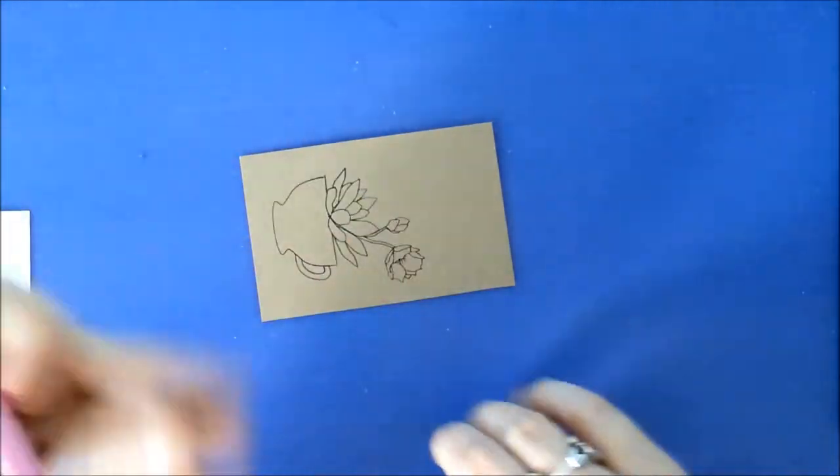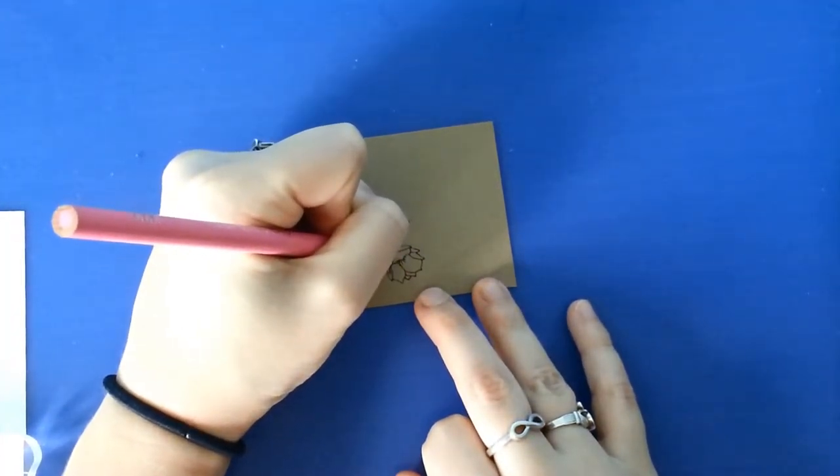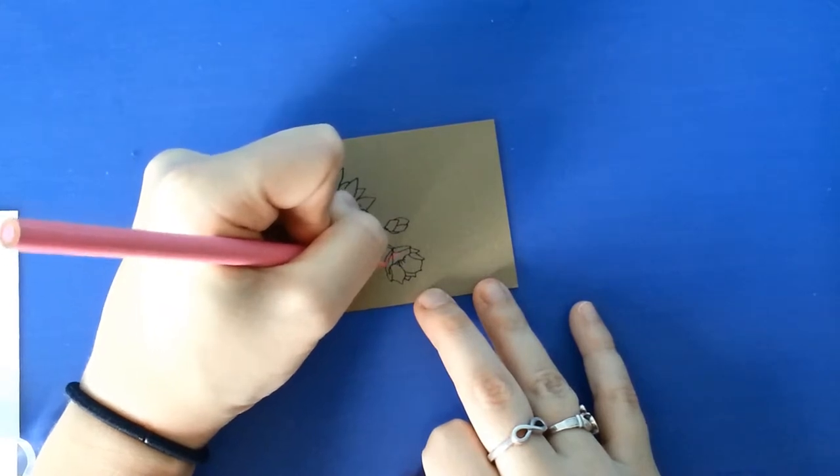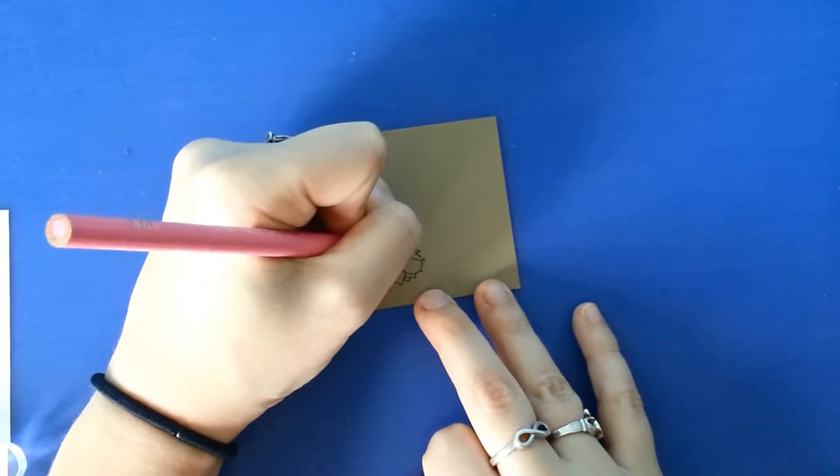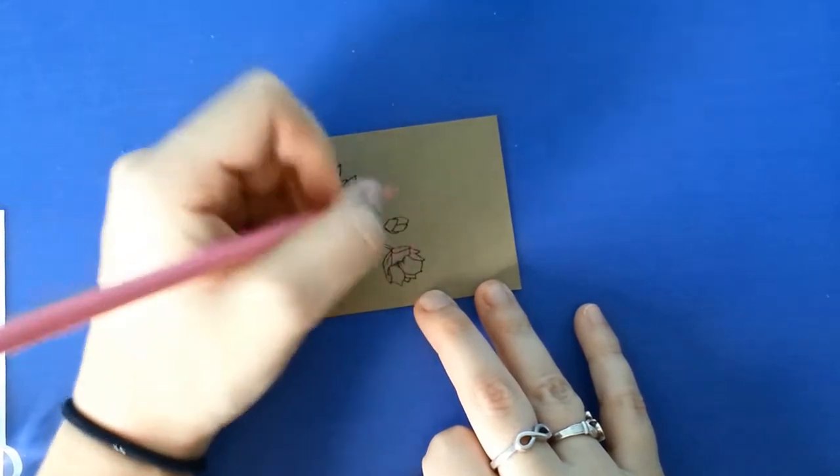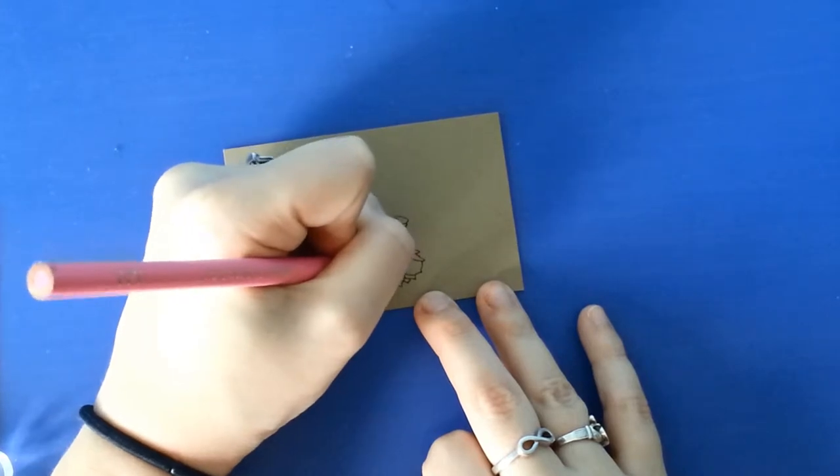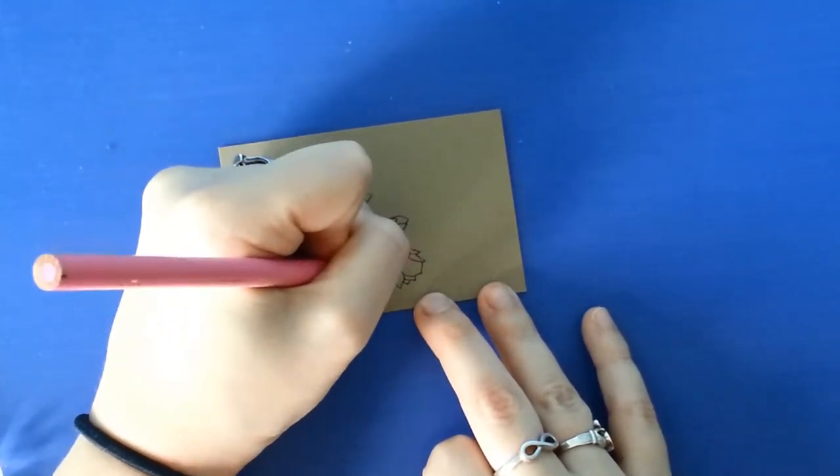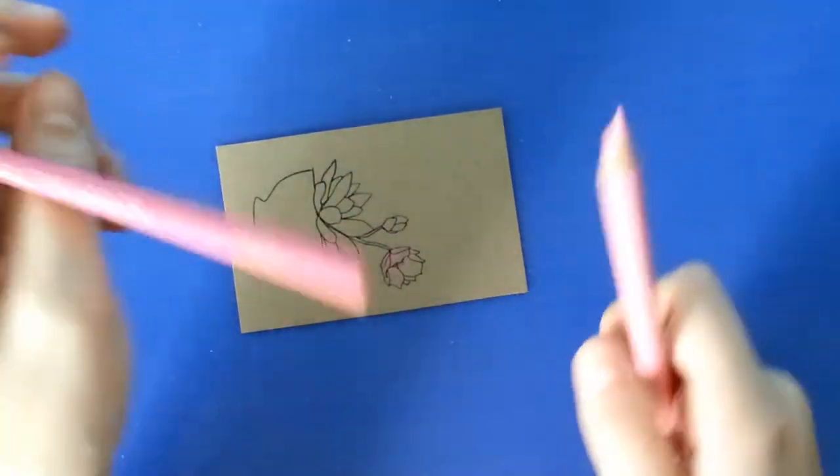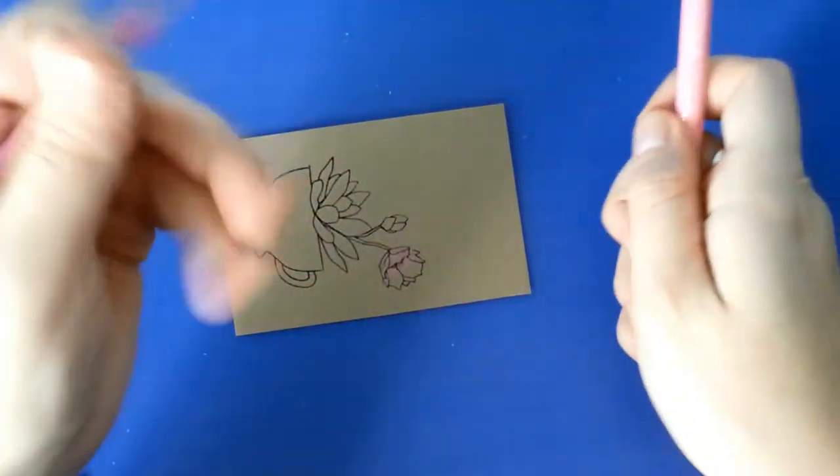I'm just going to start by putting the dark color in all the little crevices, trying to make sure I stay inside the lines because this colored pencil will kind of cover that up a little bit. I'm just going to continue like this for the flowers and the succulent.